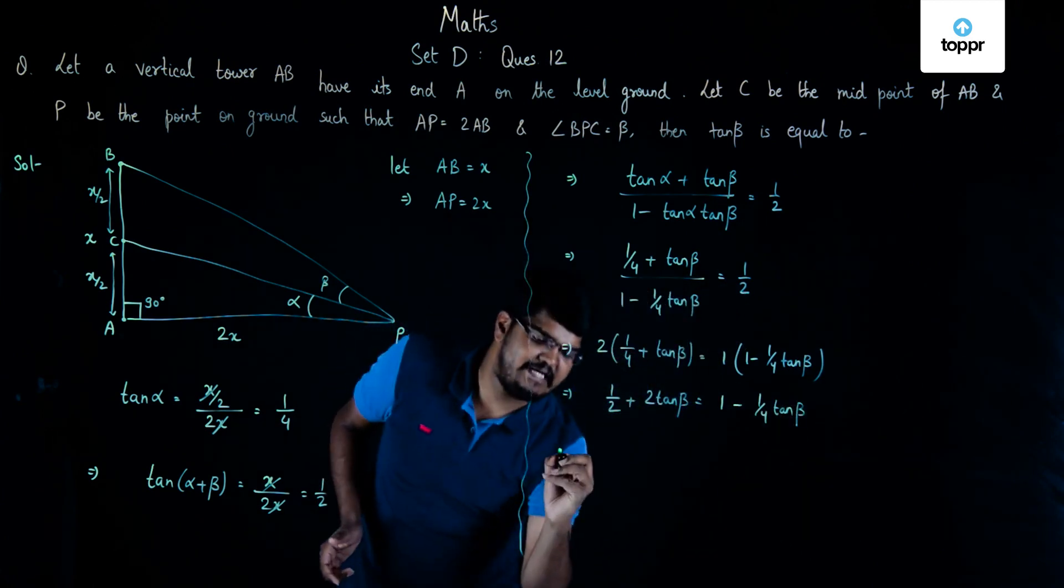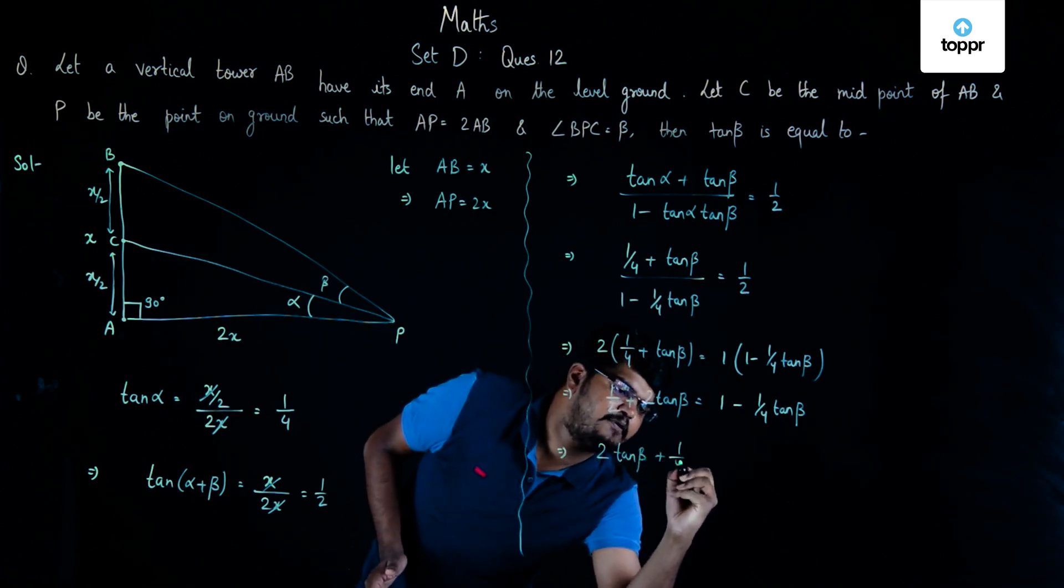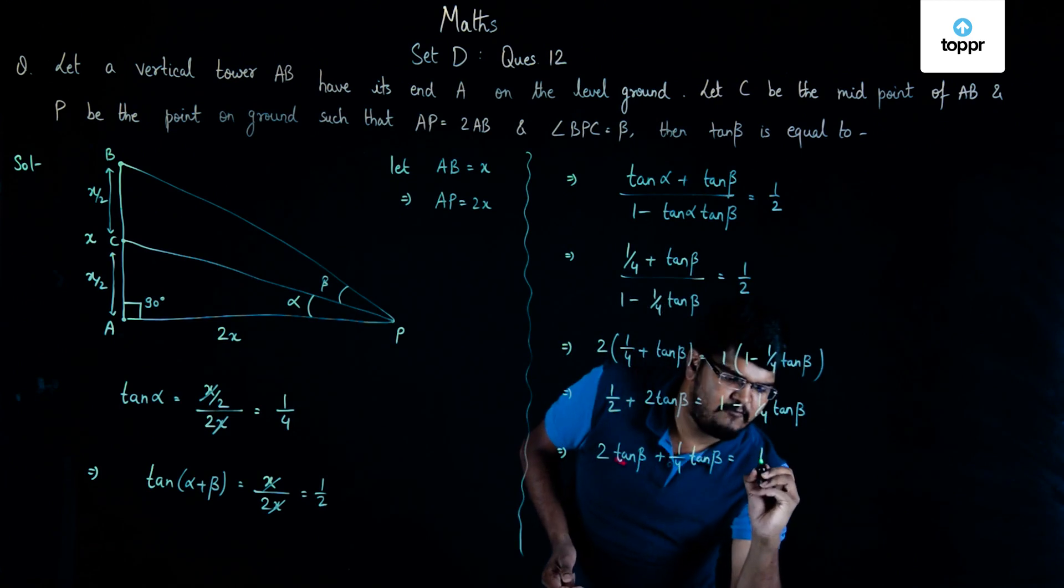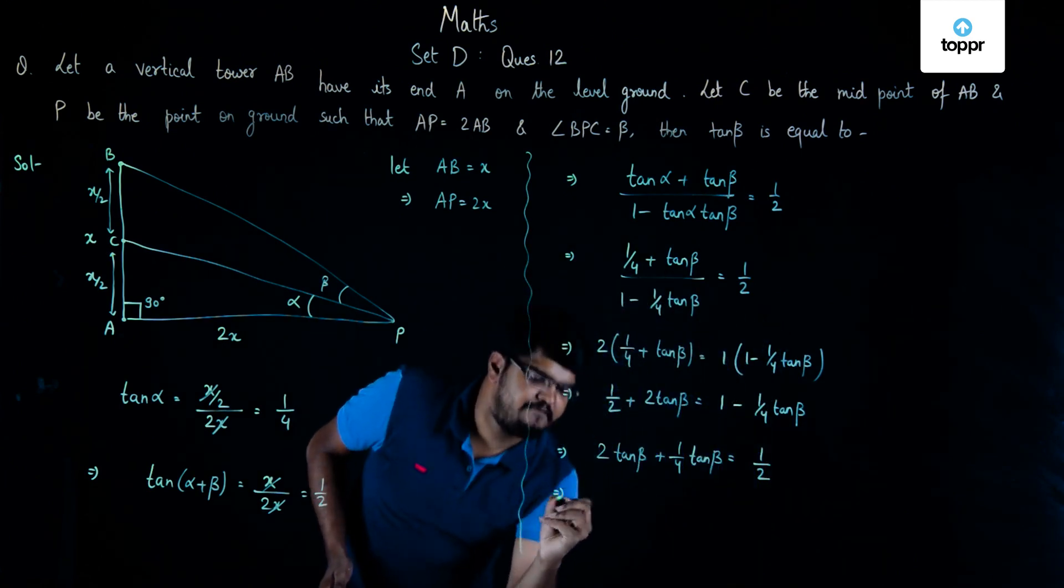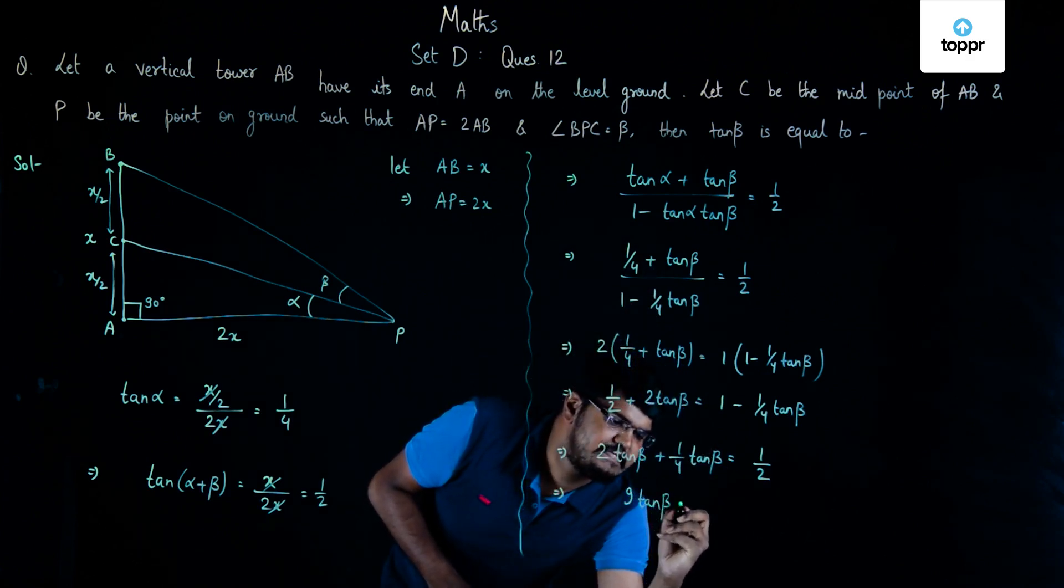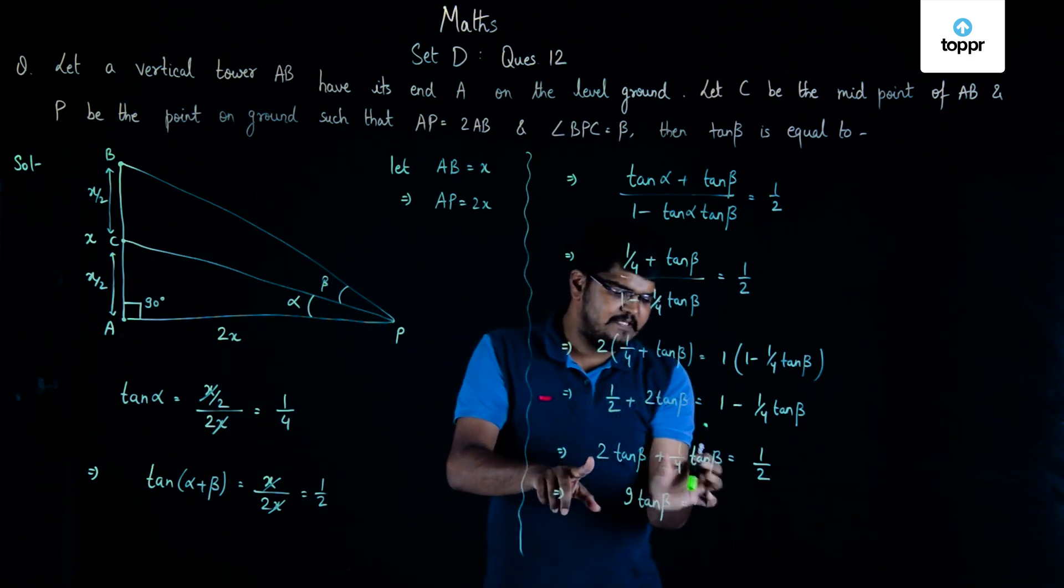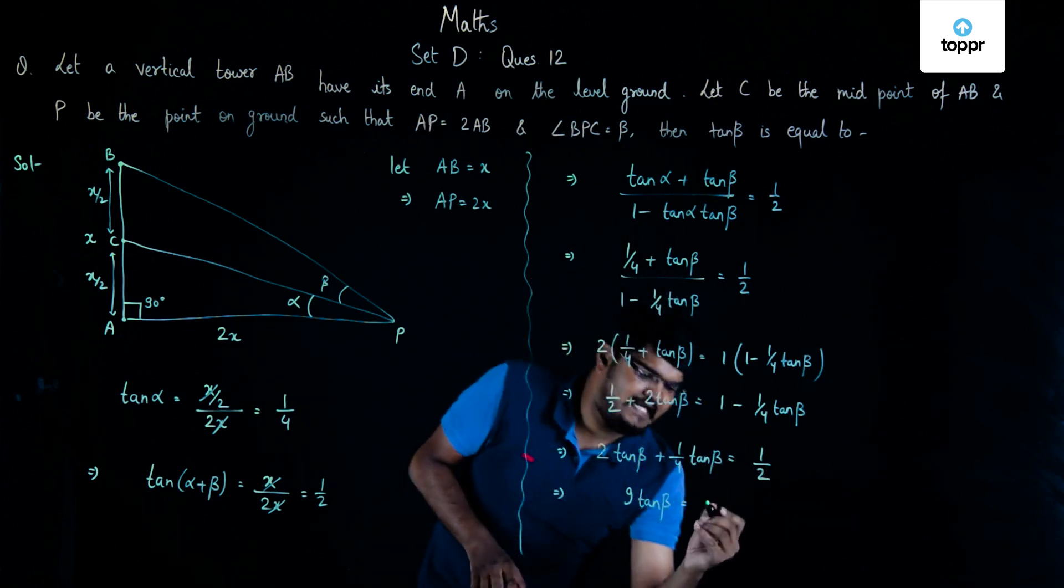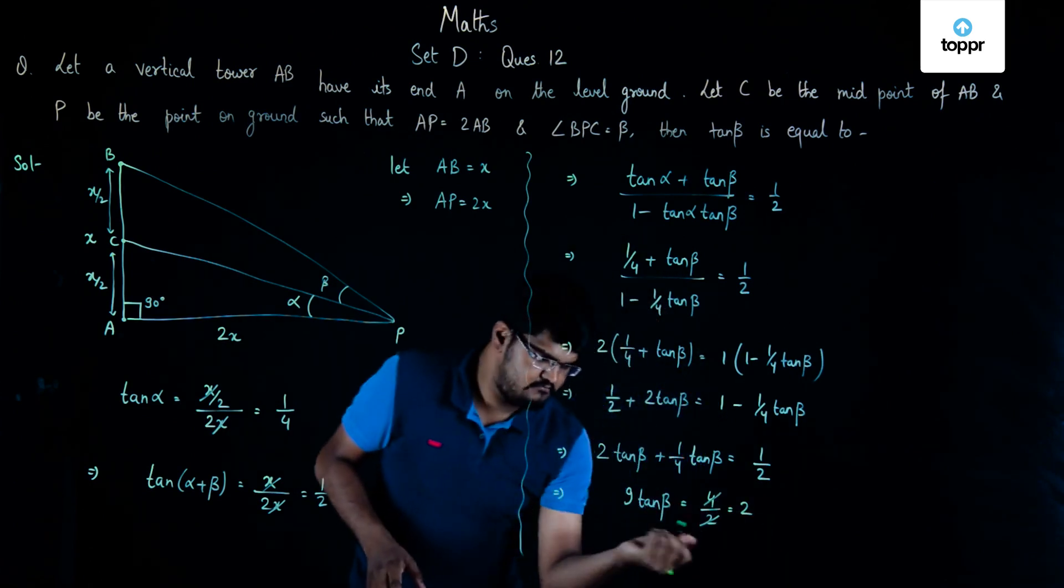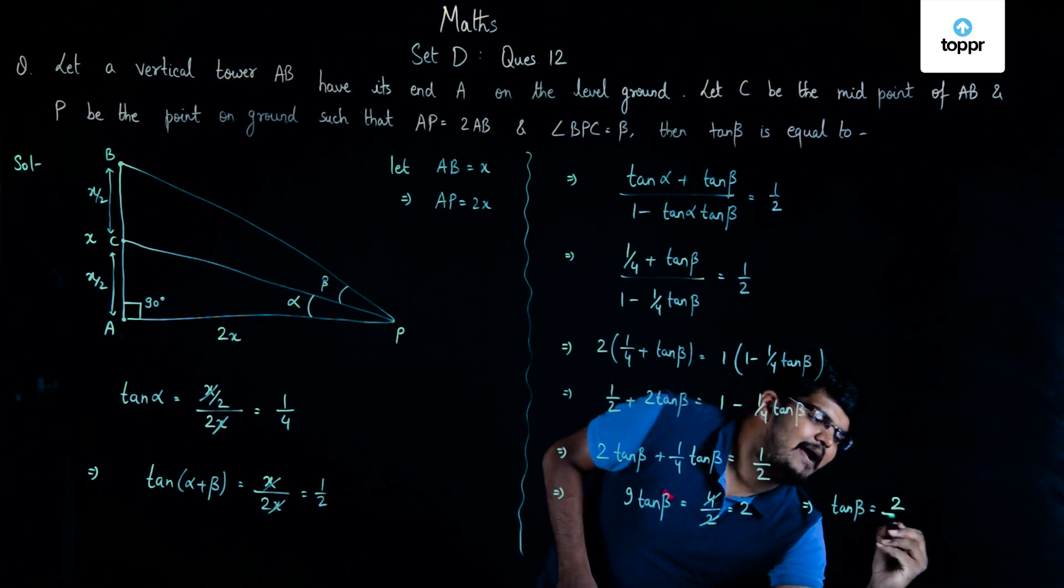Taking tan beta on one side, we are going to get 2 tan beta plus 1 by 4 tan beta is equal to 1 minus 1 by 2, that is 1 by 2 and now if we solve this, it will become 9 tan beta. Now in the denominator, there will be a 4 which will be the LCM of 2 tan beta plus 1 by 4 tan beta. Now, we'll send this 4 on the right hand side and we will get 4 by 2 which I can say is 2 and thus, we can say that tan beta is actually equal to 2 by 9.